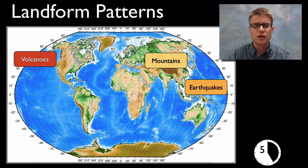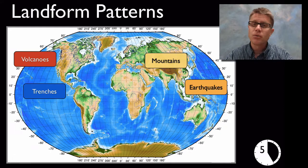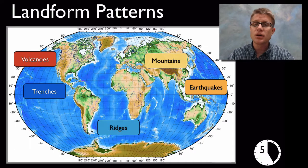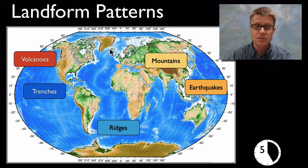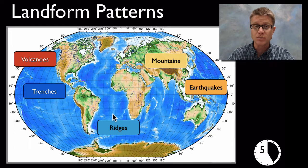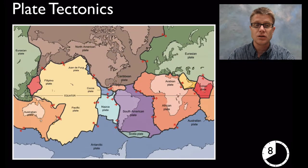Where are the volcanoes on our planet? Where are we going to have these trenches in our oceans — these deep places like the Marianas Trench? And where are we going to find these ridges in the ocean? This is a mid-Atlantic ridge right down the middle of the Atlantic Ocean, where that crust is being formed. The Atlantic Ocean is going to get larger and larger over time.